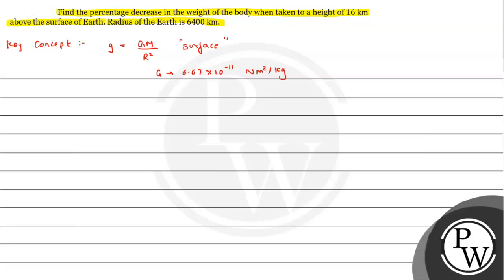The mass of the Earth is 1.0 × 10²⁴ kg, and the radius of Earth is 6400 kilometers. These are the basic values we have already studied. This formula is on the surface, so if we move above the Earth's surface, we need a modified expression.